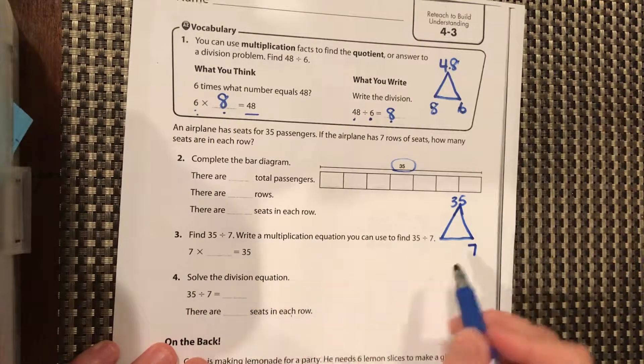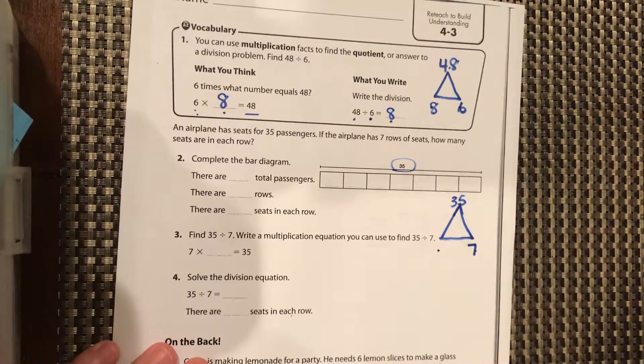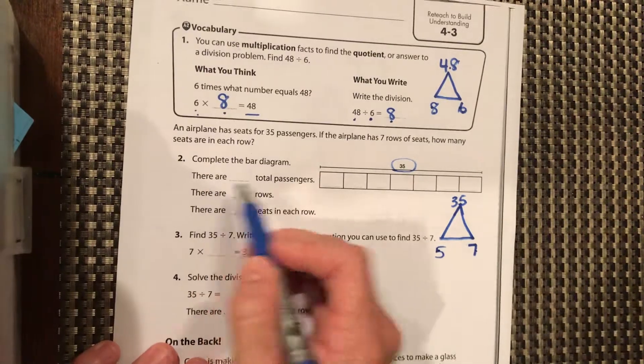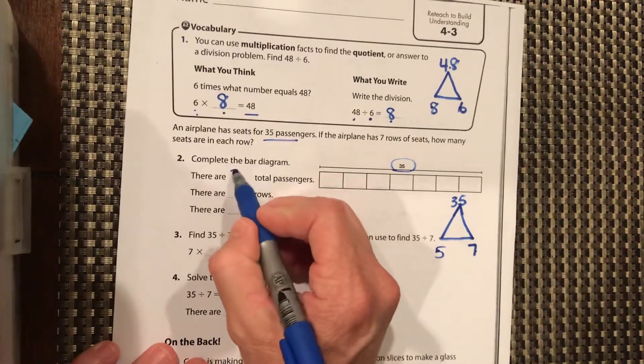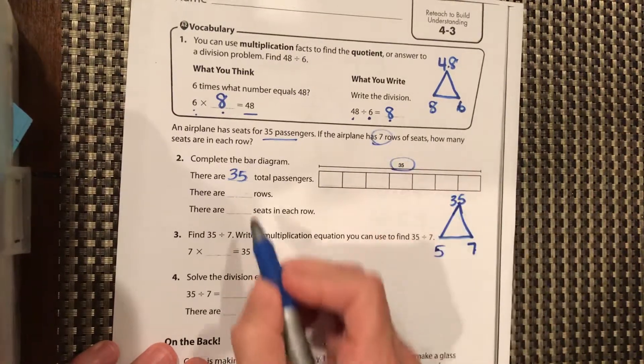Okay, we know, we have to ask ourselves, 7 times what equals 35? We know that's a 5. Okay, so there are a total of 35 passengers. We know that there are 7 rows.